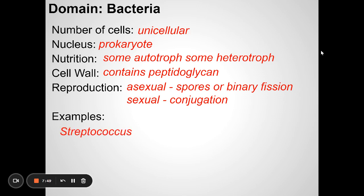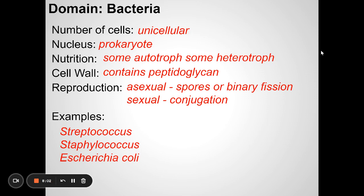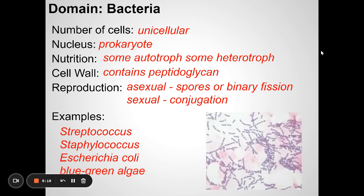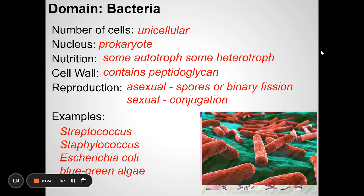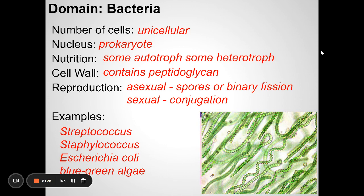Some examples of bacteria include ones you're familiar with because they cause disease. Streptococcus causes strep throat. Staphylococcus causes staph infections, which can be skin infections. Some types of E. coli live in our digestive tract and are actually helpful — they help us break down nutrients. Blue-green algae are producers. These are all types of bacteria, and we're talking about the domain Bacteria — one of the three domains.